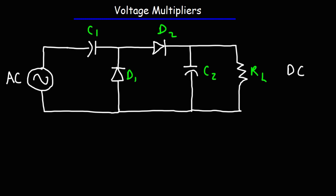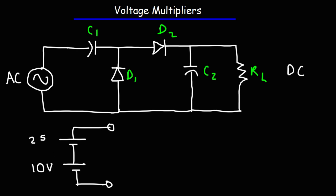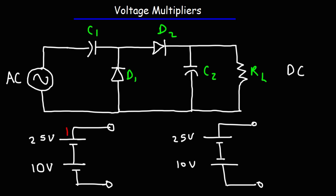Now let's talk about how the circuit increases the voltage, and to do that let's briefly review batteries. Let's say we have two batteries connected in series — the first one is a 10-volt battery and the second one is a 25-volt battery. What is the output voltage across those two batteries? Whenever you connect the negative terminal of one battery to the positive terminal of the other, the voltages add up. So the total voltage across these two batteries will be 35 volts.